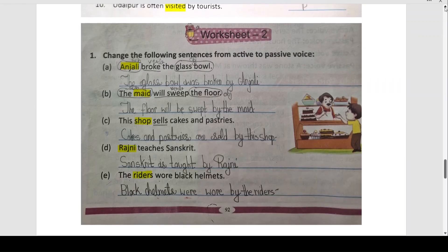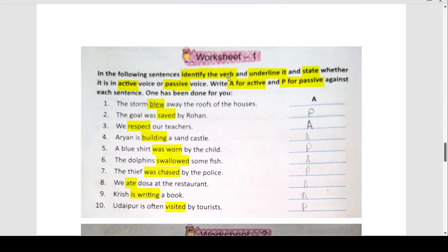Now we will do your worksheet. In the following sentences, identify the verb and underline it and state whether it is active voice or passive voice. Write A for active and P for passive against each sentence. The storm blew away the roofs of the houses — storm subject, blew verb, roofs of the houses object — active voice, because the subject is doing the action. The goal was saved by Rohan — by Rohan means the subject 'goal' is receiving action — passive voice. We respect our teachers — we subject, respect verb, teachers object — active voice. Aryan is building a sandcastle — Aryan subject, building verb, sandcastle object — subject is doing action on object, so active voice.